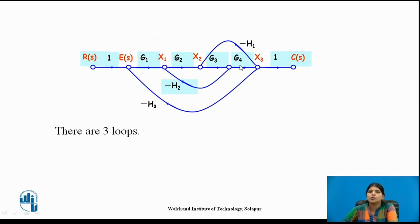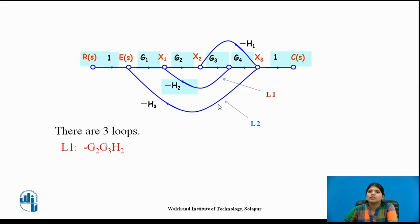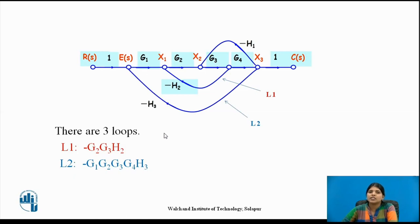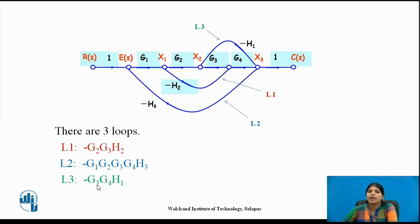There are three loops total. The first loop L1 has gain equal to −G2·G3·H2. L2 has gain equal to G1·G2·G3·G4·(−H3). L3 has gain equal to −G3·G4·H1. These are the loops and their respective loop gains.